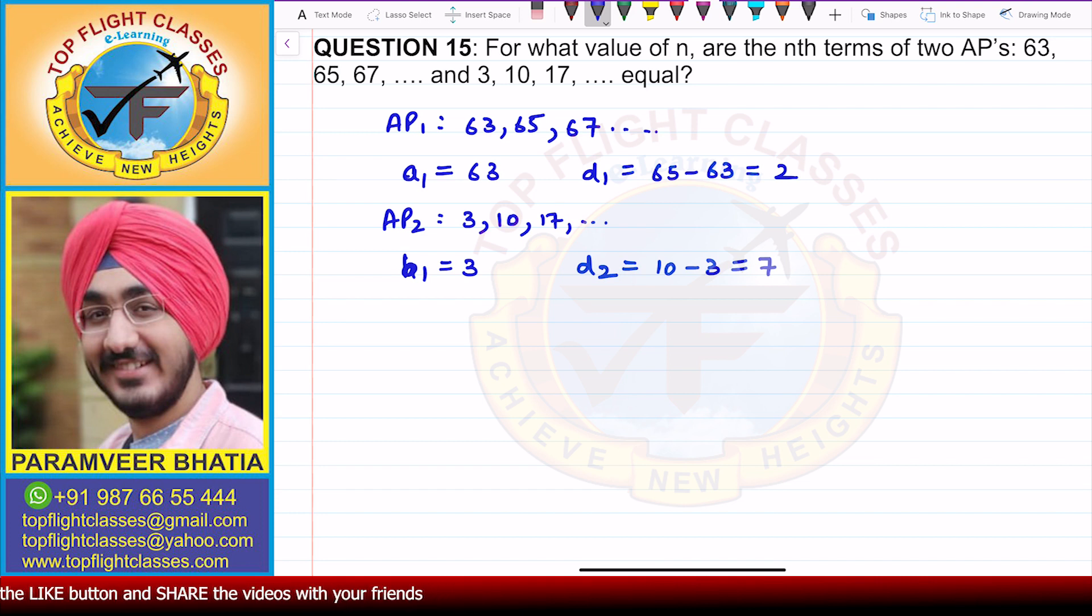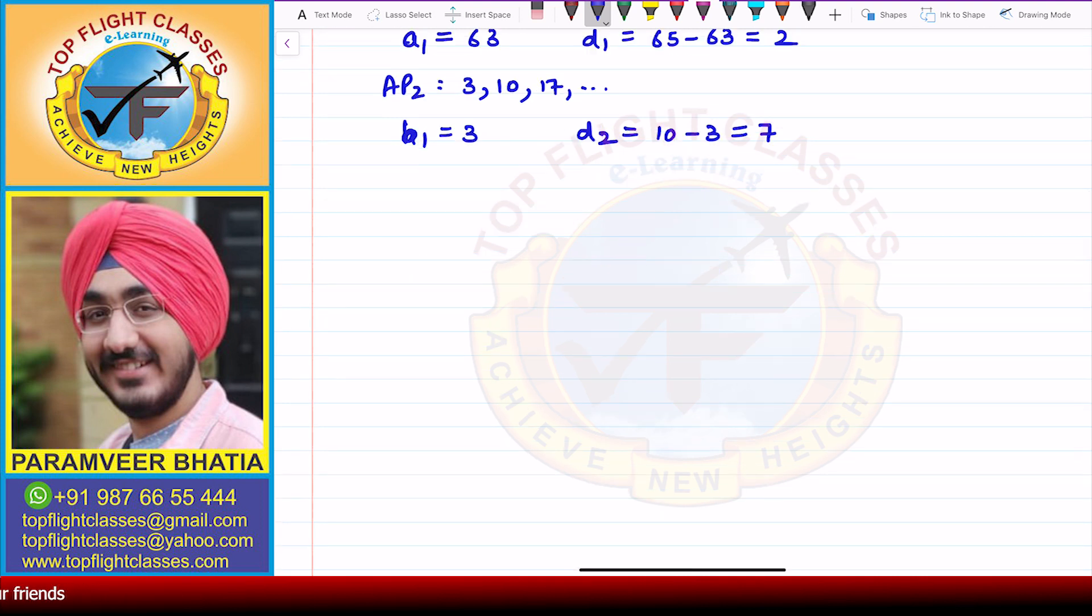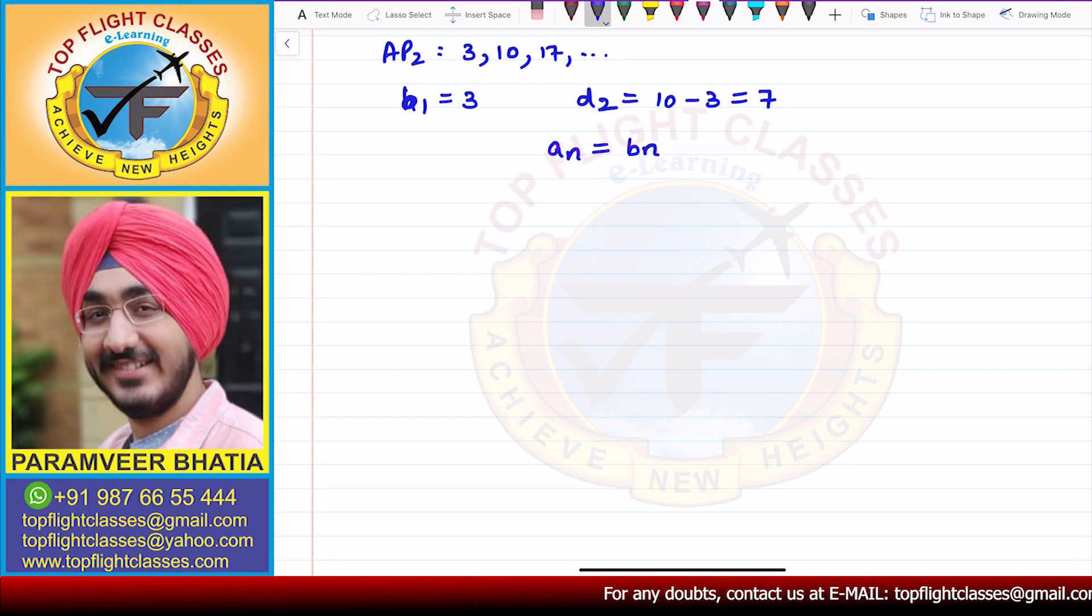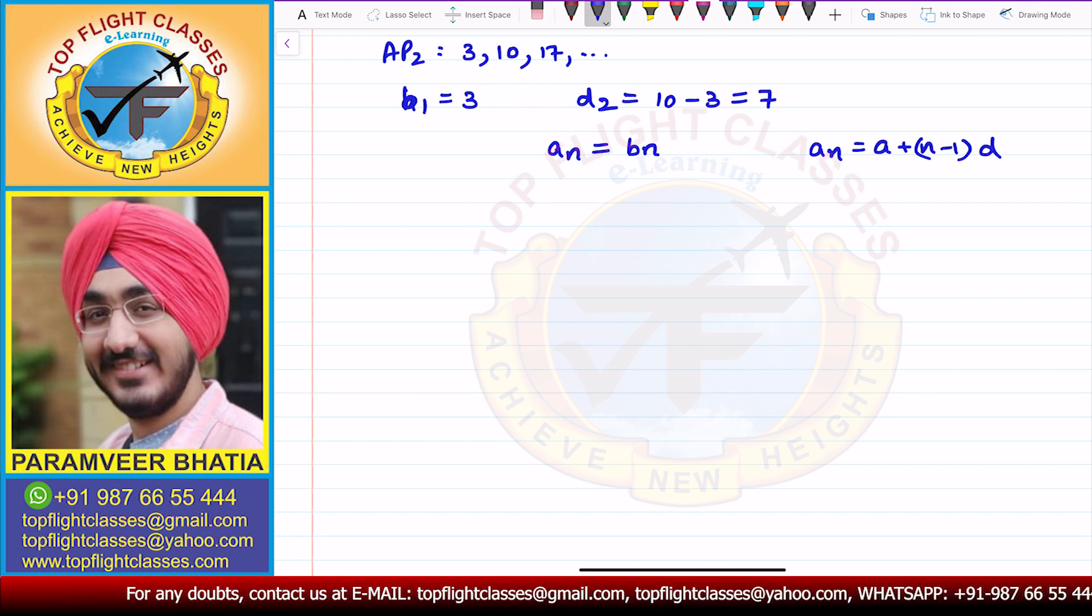Now, we say that the nth term of the first AP should be equal to the nth term of the second AP. So we have nth term is equal to A plus n minus 1 times D. Now if we look at this formula and open this equation, what I will get is,